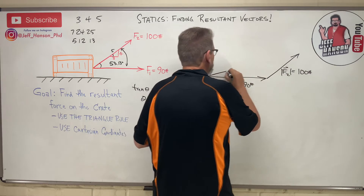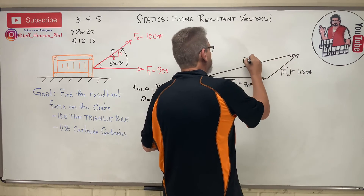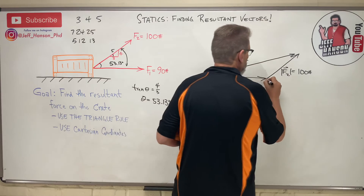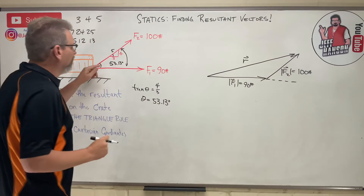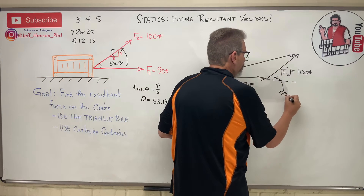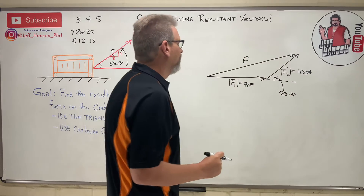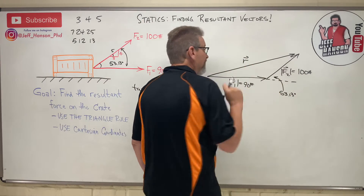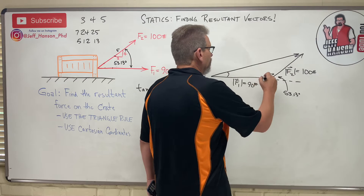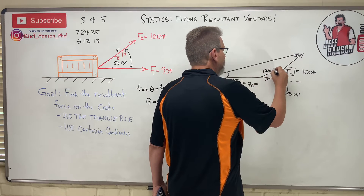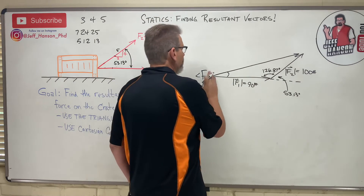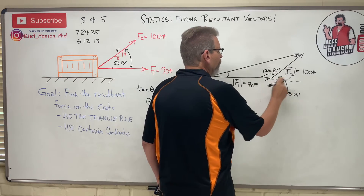The resultant vector R is drawn closing the triangle. Now, what angles do we know? From horizontal up to F1 is 53.13°. The included angle between F1 and F2 in the triangle is 90° + 36.87° = 126.87 degrees.